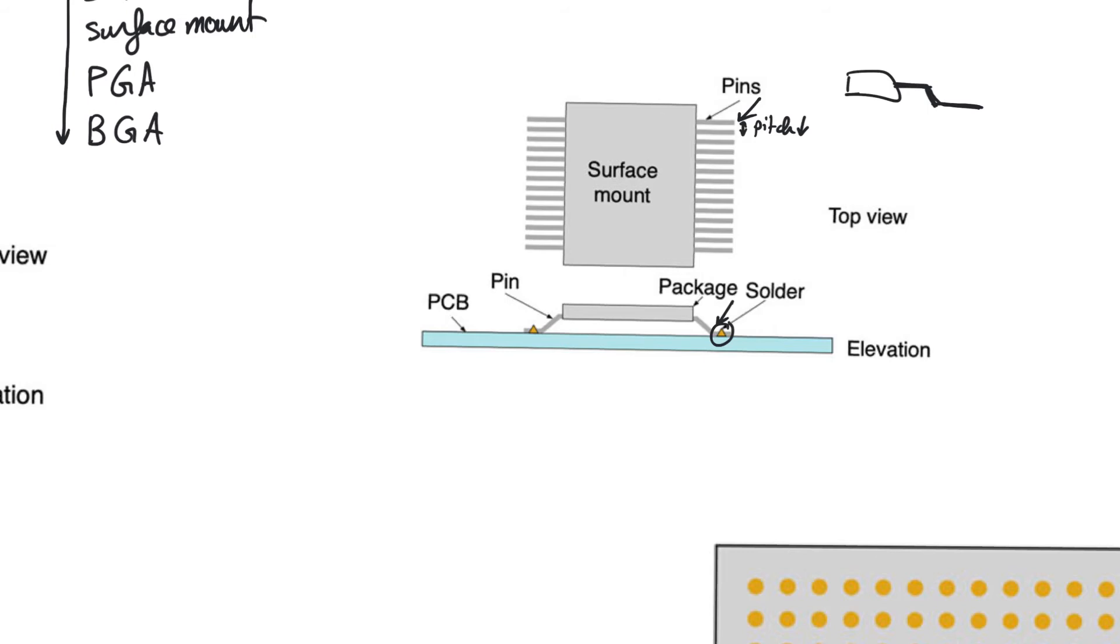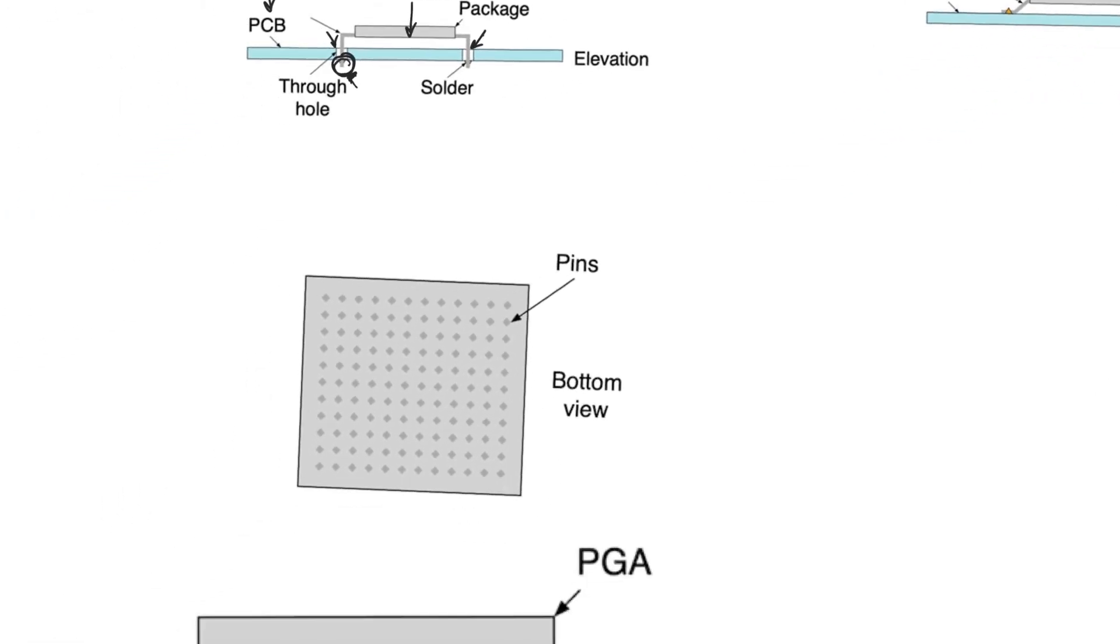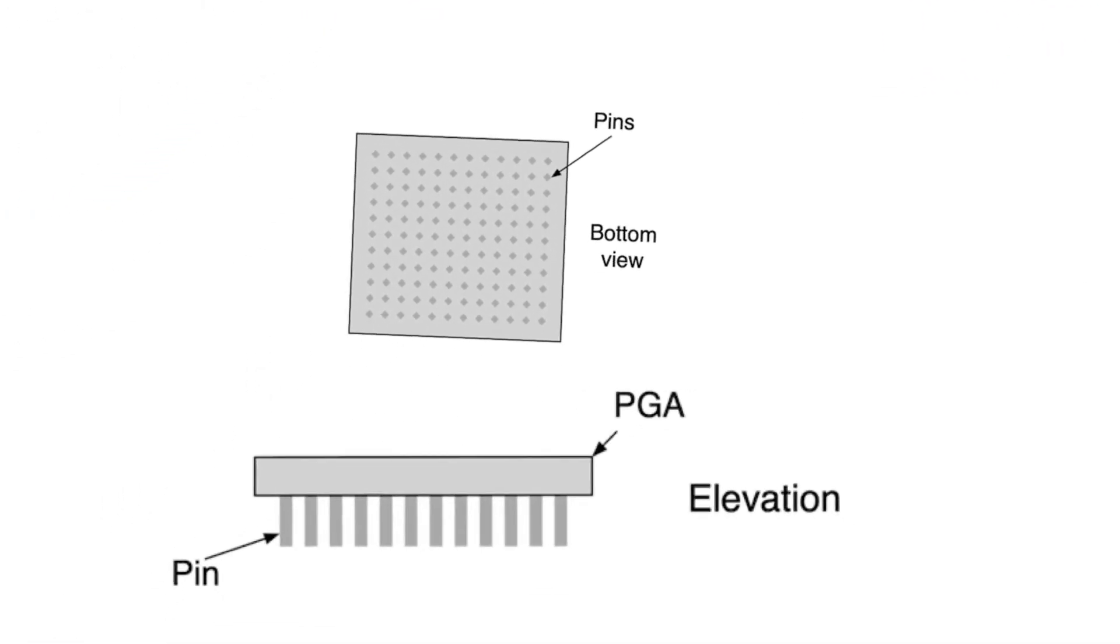With very large chips, especially those that contain microprocessors, the perimeter of the die is not large enough to accommodate all the pins that we need, even with surface mount technique. In such case, what we end up having to do is use the bottom of the package to contain the pins. In that case, you're opening a two-dimensional space for yourself and you allow yourself to have a lot more pins than you would have on the perimeter alone.